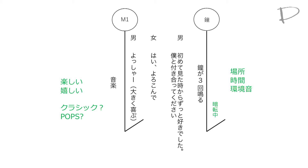次は、音のレベルを書いていきます。まずは、再生機の名前を書きましょう。今回は、BというフェーダーだったのでBと書き、